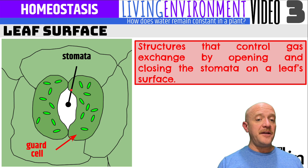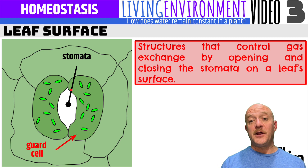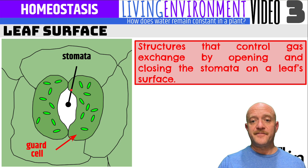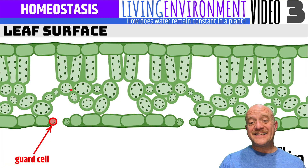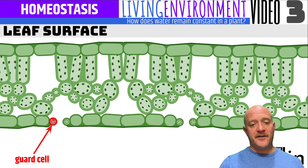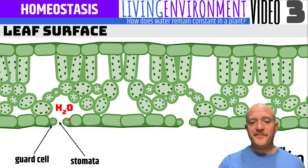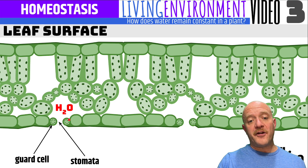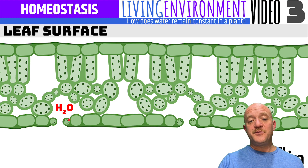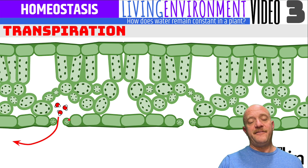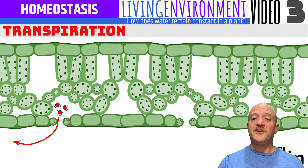When there is a lot of water, the guard cells will open. When there's not a lot of water, the guard cells will close. From the side it looks like this: we have the guard cell and the stomata is in between them — two guard cells with the stomata between them. Water inside the leaf needs to evaporate, and these little water molecules will leave the leaf through a process called transpiration.